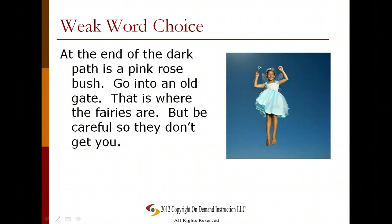Let's take a look at weak word choice — what the opposite looks like. "At the end of the dark path is a pink rose bush. Go into an old gate. That is where the fairies are. But be careful so that they don't get you." Here we have an example of weak word choice describing the same magical gate as earlier, but it's not using those great vocabulary words that give us wonderful visuals so we can really picture exactly what that place is like.